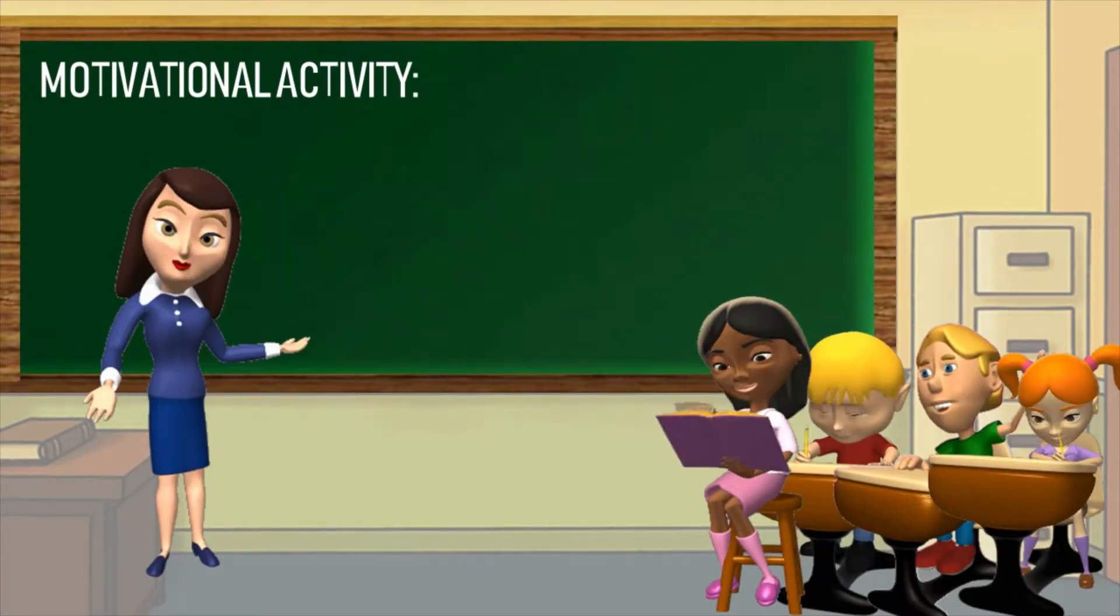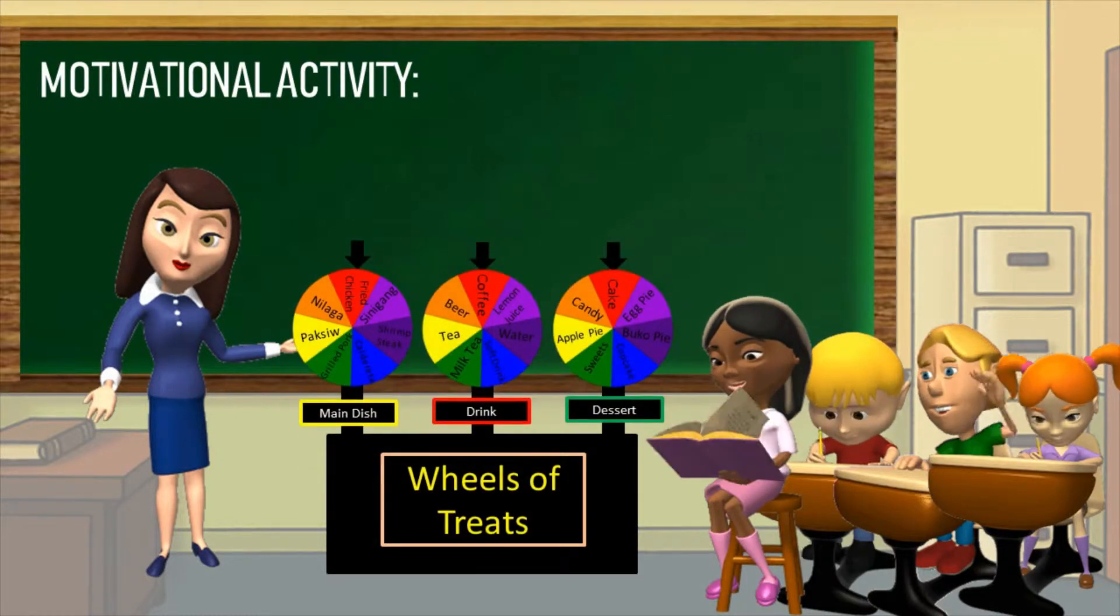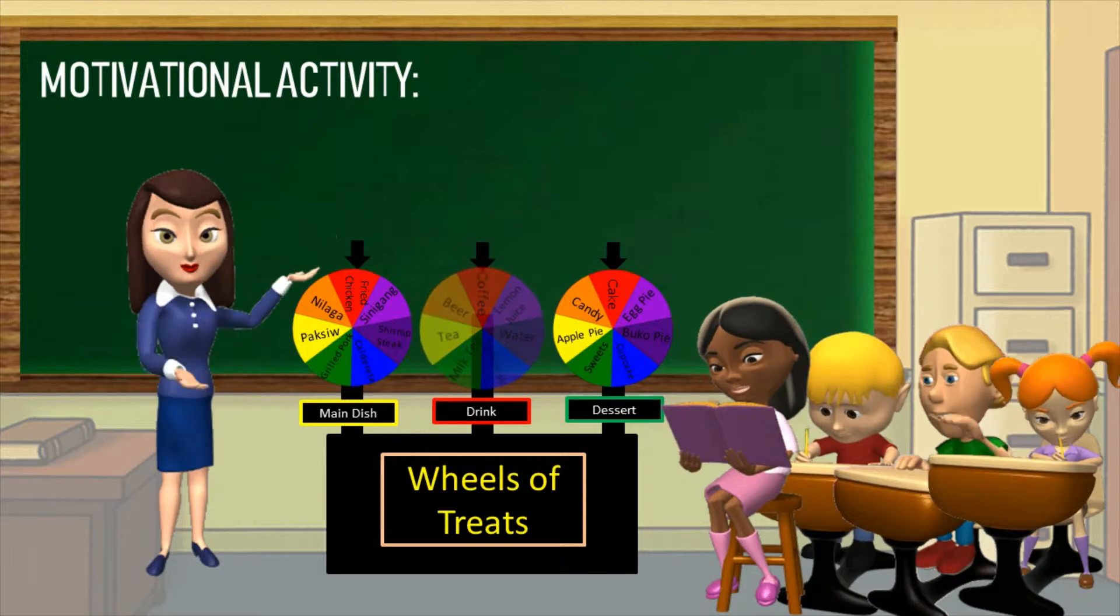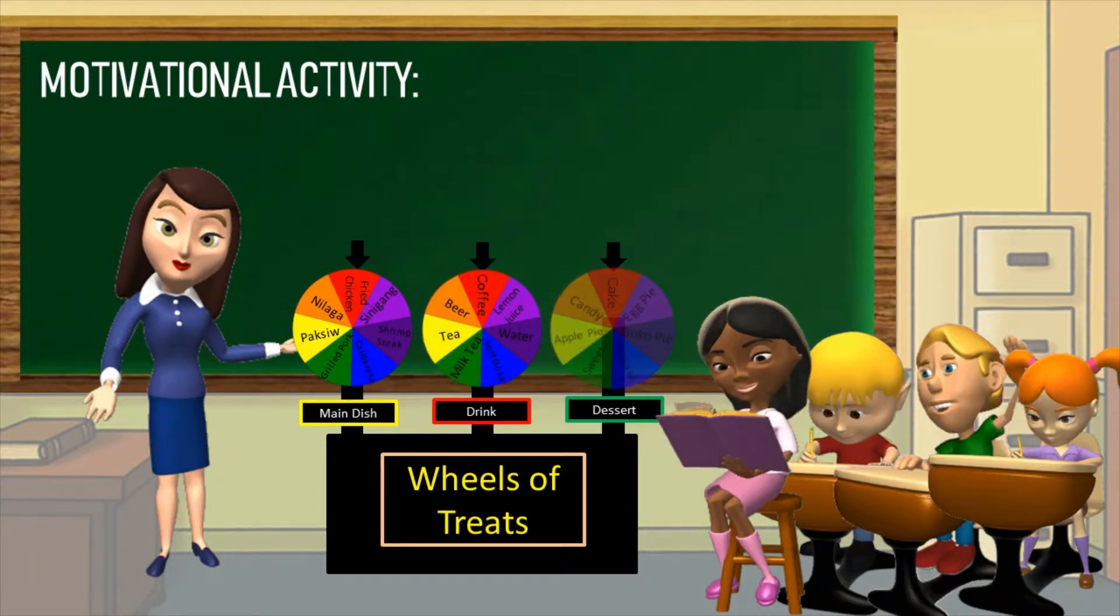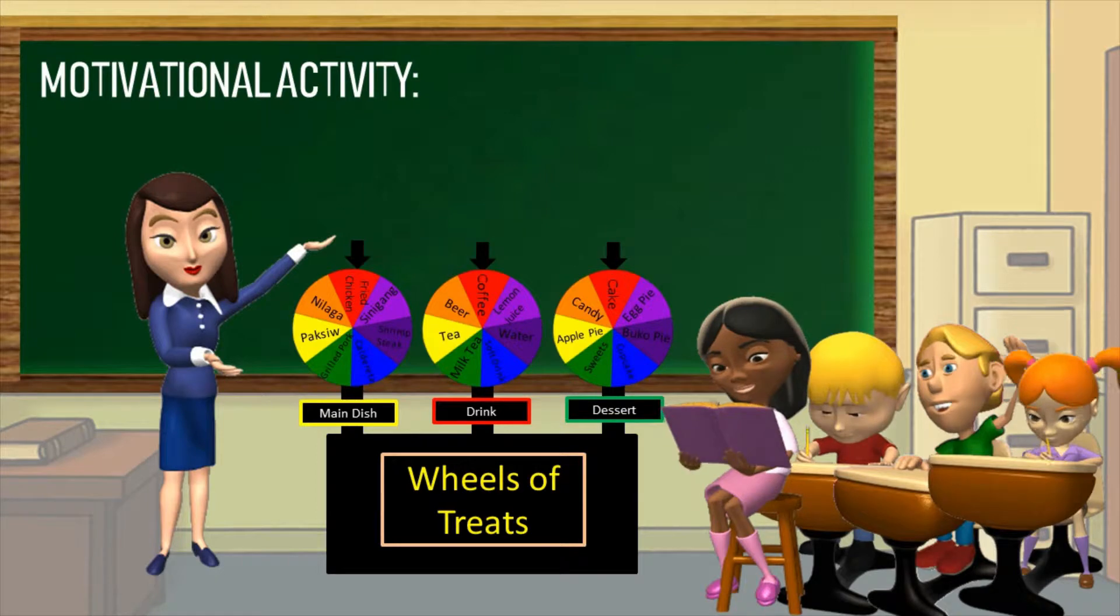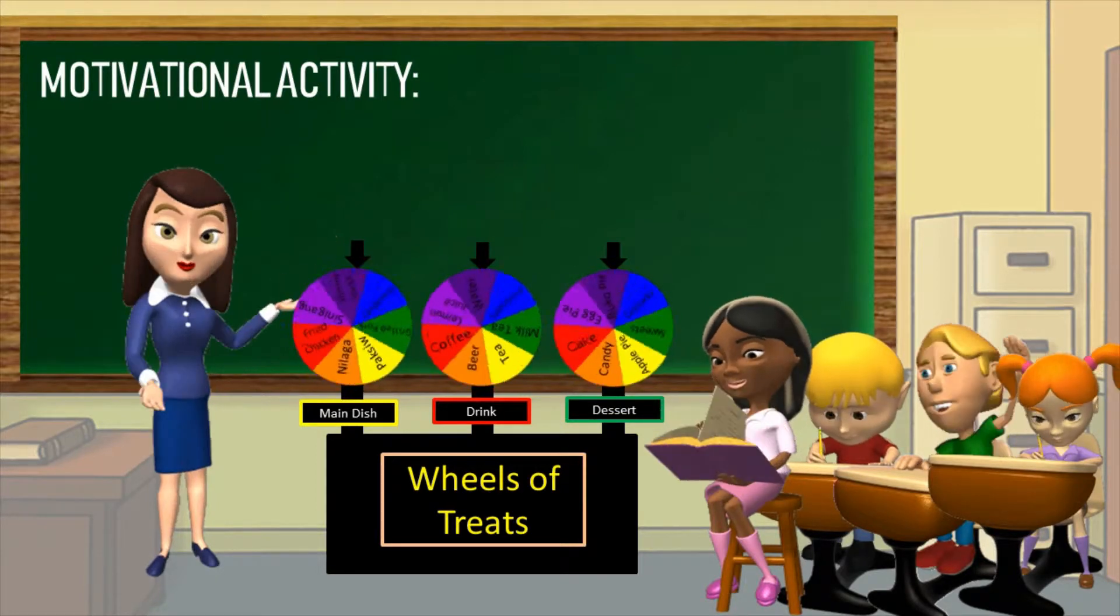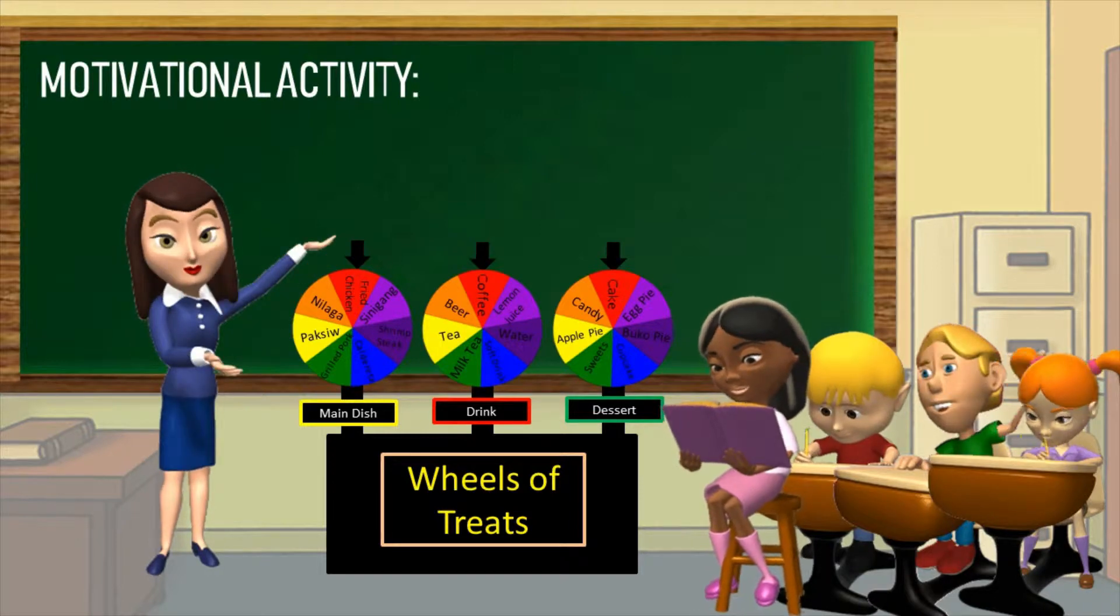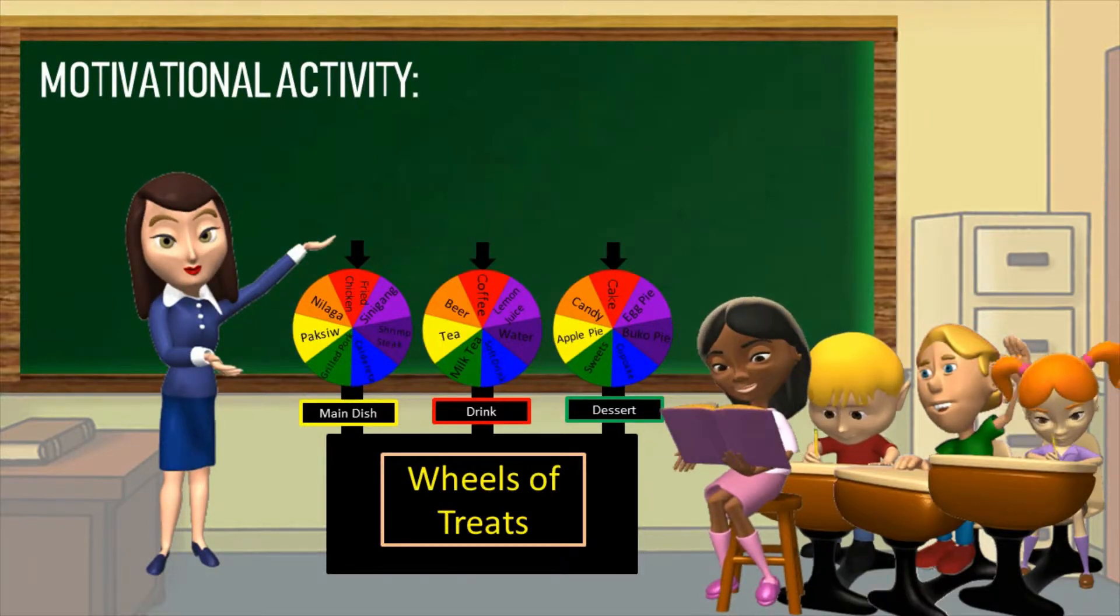Now, I have here wheels of treats. The first wheel contains the main dish, the second is for the drink, and the third is for the dessert, all of them having 7 options. Spin each wheel to get a set of meal. Teacher, I will be the first to spin. Go ahead.